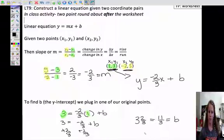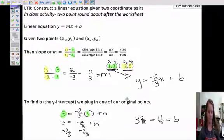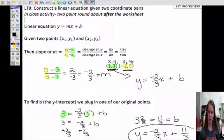So my final equation, and I'll write it down here, I'll try to make it a little bigger. My final equation is going to be y equals negative 2 thirds x plus 11 thirds. And that one didn't turn out super nice, but it works.